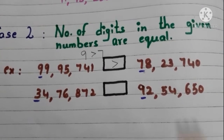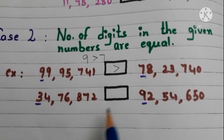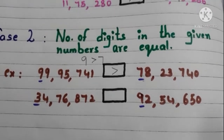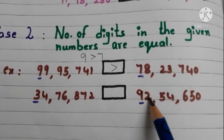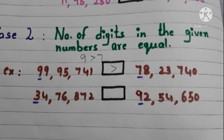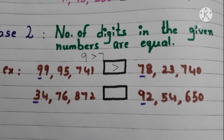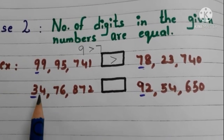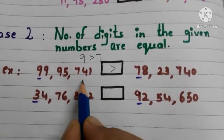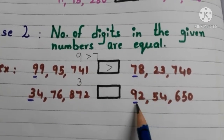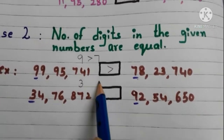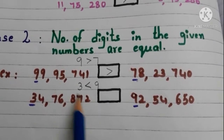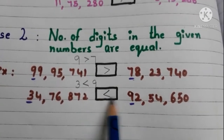Now let us go to the next example. Both numbers have 7 digits. Now compare the highest place value digits. In this number the highest place value digit is 3. In this number the highest place value digit is 9. Compare 3 and 9. 3 is less than 9. So this number is less than this number.